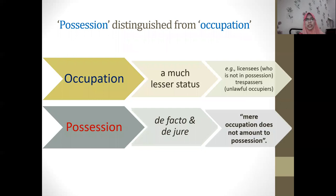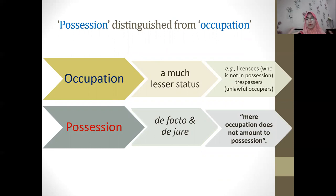A related term is 'occupation,' but it is not the same as possession — mere occupation does not amount to possession. Occupation is of a lesser status and does not fulfill the requirement of possession. For example, licensees who are given permission to be on land occupy it but are not in possession. Similarly, trespassers occupy the land unlawfully but have no possession whatsoever.